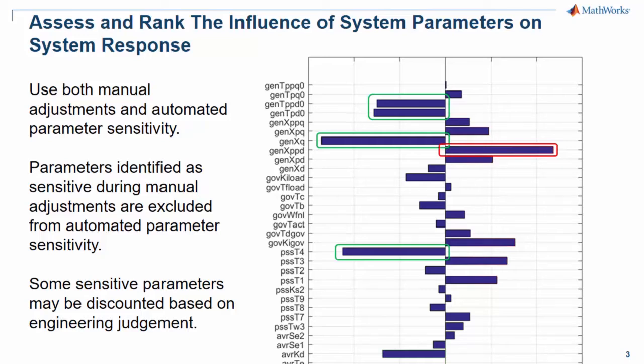Here we see a plot of the correlation of the plant parameters to the objective function. While magnitude of correlation is certainly a factor for selecting a parameter, sensitive parameters may be discounted based on engineering judgment and the degree of confidence you have in existing parameter settings.